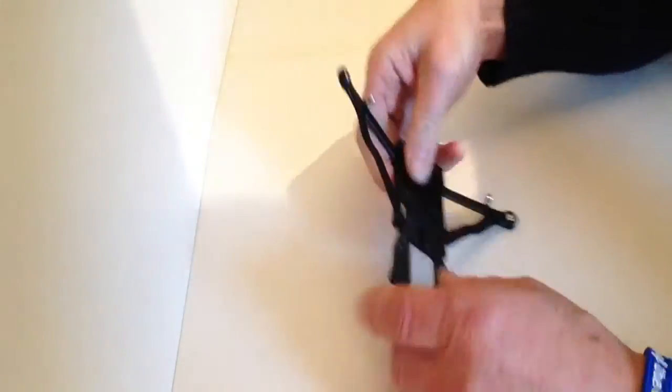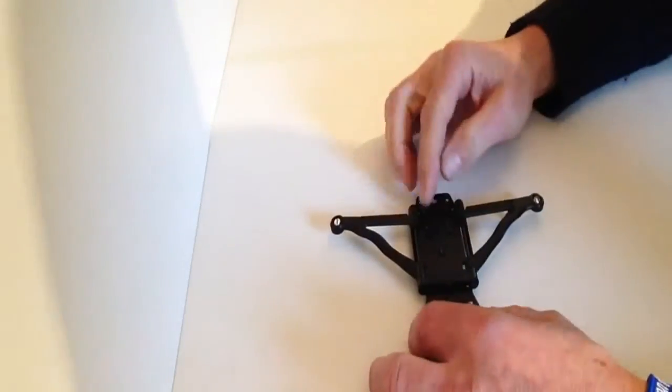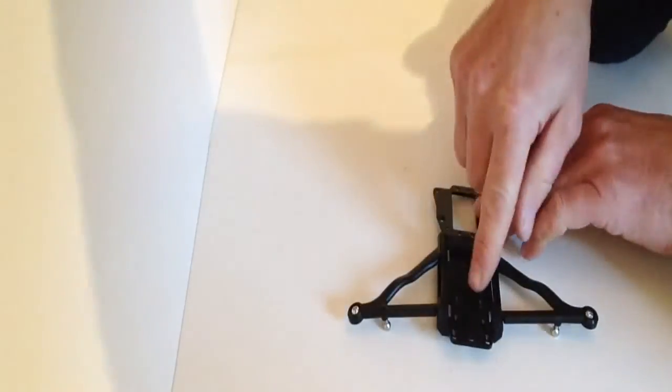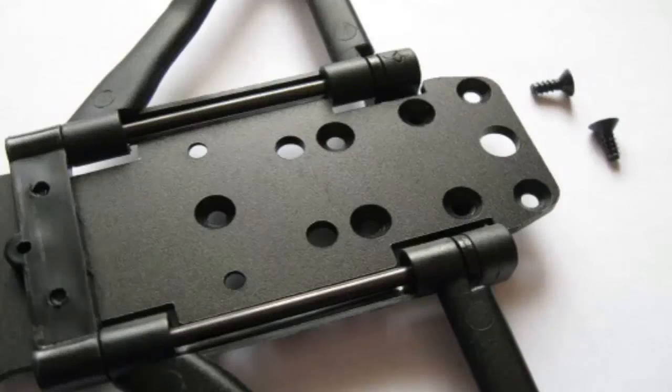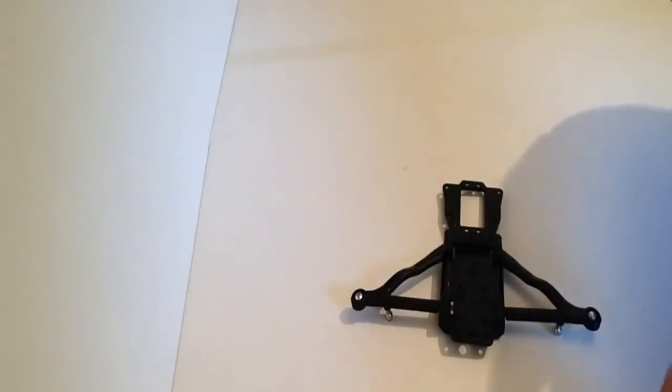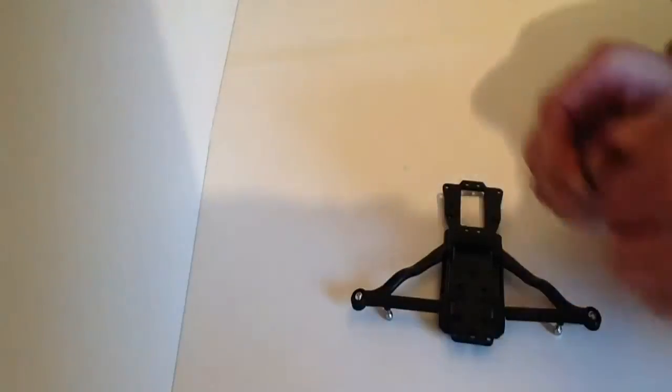Then we're going to flip her over, and we're going to be putting the other two here and here in these two countersunk areas. Notice that these two are slightly bigger as well.